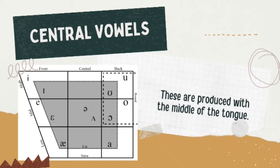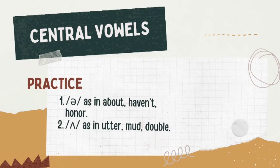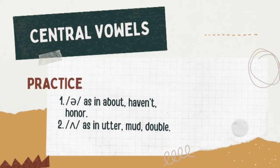Central vowels are produced with the middle of the tongue. There are the /ə/ and /ʌ/ sounds. Let's practice together. The /ə/ sound, as in 'about,' 'haven't,' and 'honor.' The last one is the /ʌ/ sound, as in 'utter,' 'mat,' and 'double.'